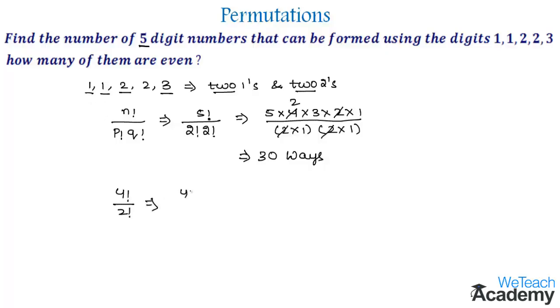We get four times three times two times one divided by two times one. Cancel two in the numerator and denominator, then we get four times three equals twelve. So the required number of five digit even numbers that can be formed is twelve ways.